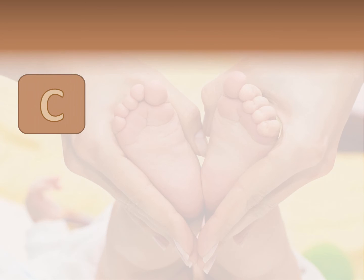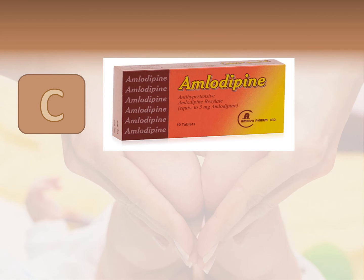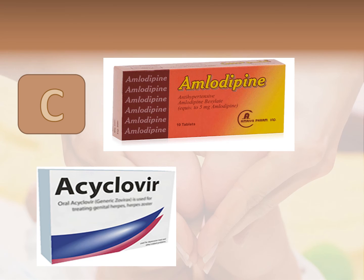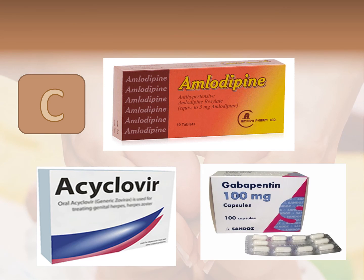Category C means risk in animal studies, but potential benefits in humans may warrant the use of it in pregnancy. For example, Amlodipine, a calcium channel blocker for hypertension; Acyclovir, an antiviral; and Gabapentin, an antiepileptic medication.